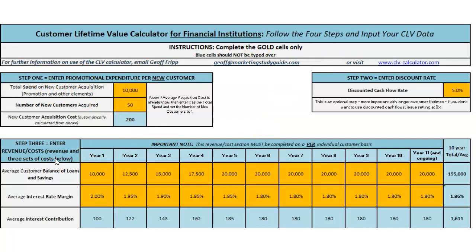The first thing we need to do, if we're looking at new customers, is build in what is the acquisition cost. We work out how much money we spent over a period of time on promotion and incentives to attract customers, how many did we acquire in that period, and then we work out the average acquisition cost. This is an average of course, so it will vary, but it gives us a good starting point. If we're looking at existing customers, we already have them — that's a sunk cost and we don't need to put anything in here; we can set that to zero.